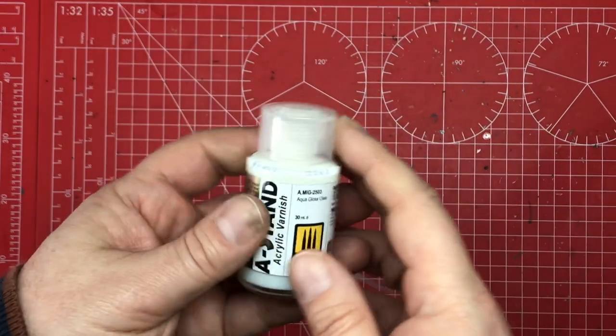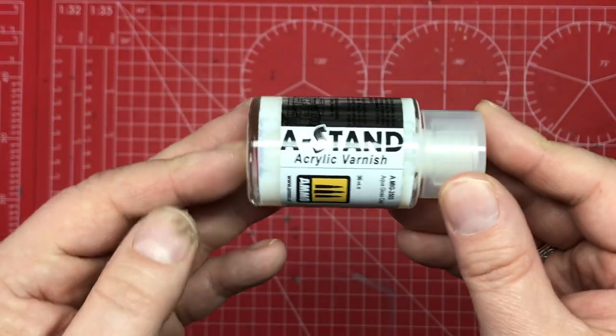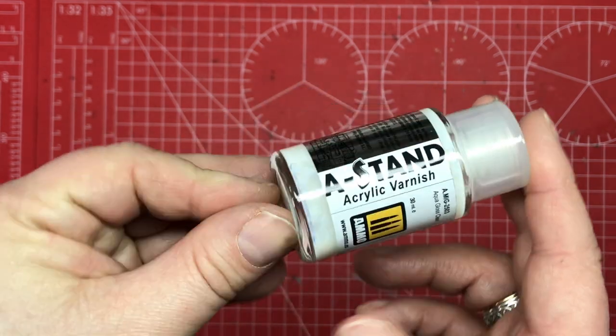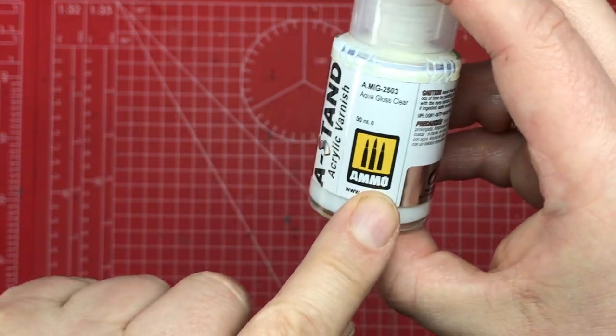Hello and welcome to Model Kit Stuff. Today we've got a little product review for you. This is A-Stand acrylic varnish from Mig Ammo.